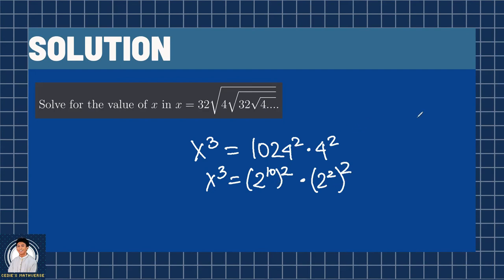So, using product of power rule of laws of exponents, we have x cubed equals 10 times 2 is 20, and 2 times 2 is 4. So 2 raised to 20 times 2 raised to the fourth, which is 2 raised to 24.